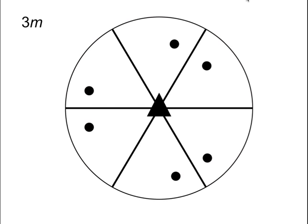One of the applications of the stereographic projection was, for example, to plot how the elastic modulus varies as a function of orientation, and another to look at how symmetry can be represented on the stereographic projection. Here, for example, we have point group 3m, and the point group 3m belongs to the trigonal system. Basically we have a threefold axis and a mirror plane parallel to the threefold axis.